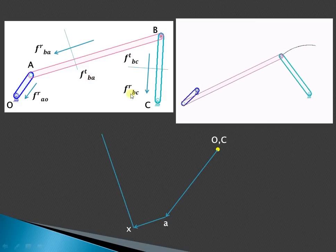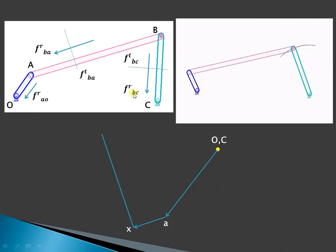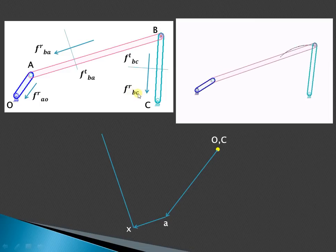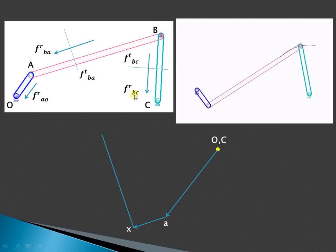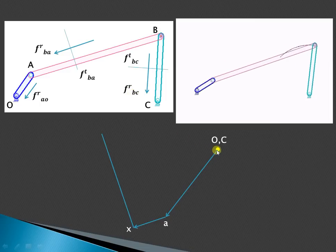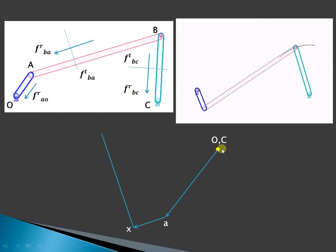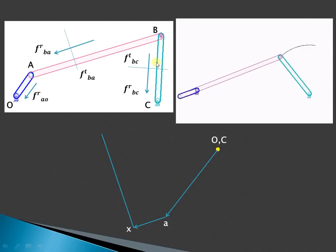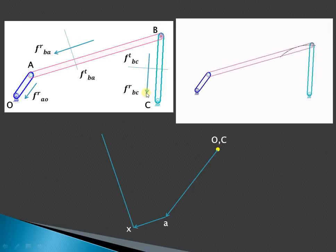The next vector is the radial acceleration of B with respect to C. Since C is known, from point C draw a line parallel to this vector and in the direction as shown.